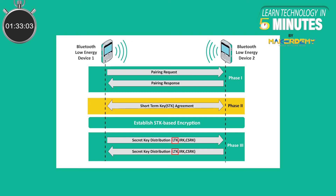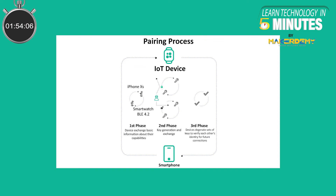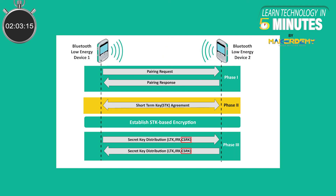3. Long Term Key (LTK): This key gets generated and stored during Phase 3 of the security process in legacy connections, and during Phase 2 in LE secure connections. It gets stored on each of the two devices that are bonded and used in subsequent connections between the two devices. 4. Connection Signature Resolving Key (CSRK): It is used to sign data and verify the signature attached to the data at the other end. This key is stored on each of the two bonded devices.